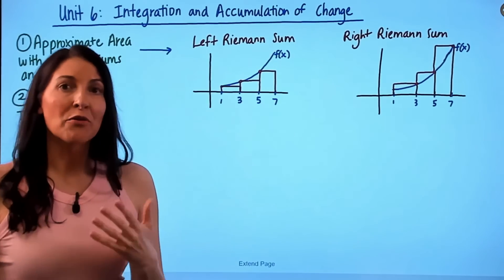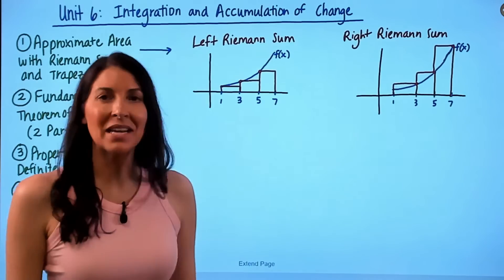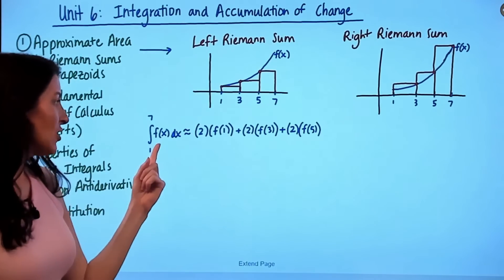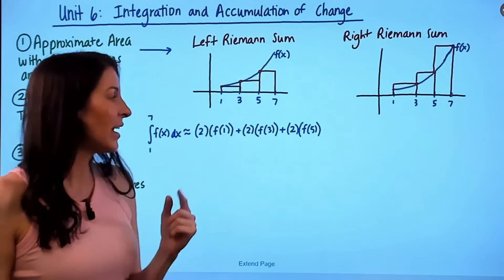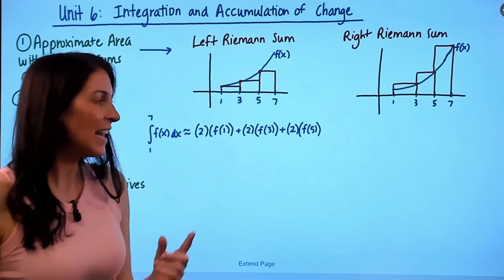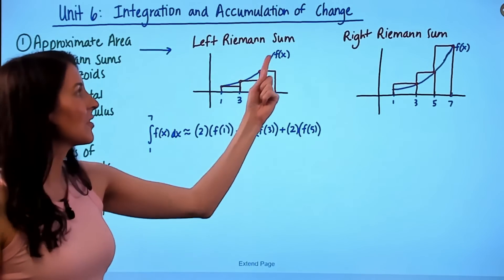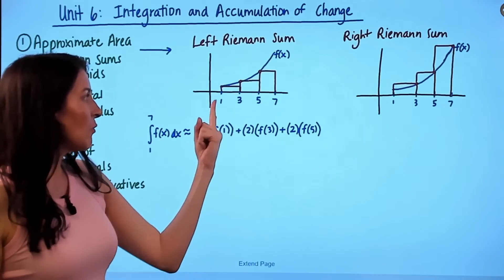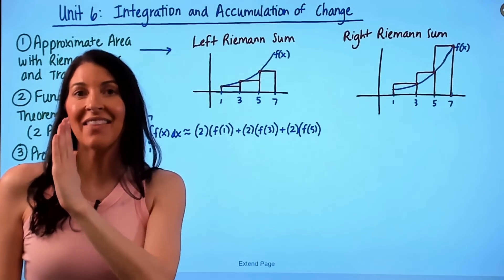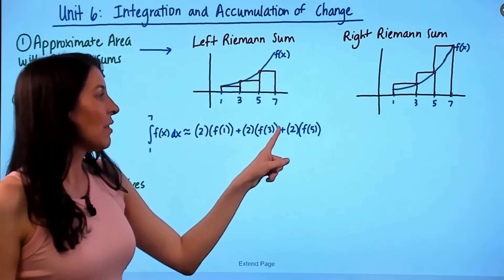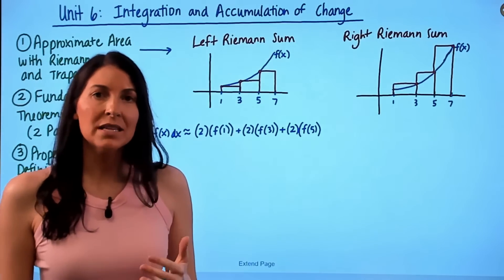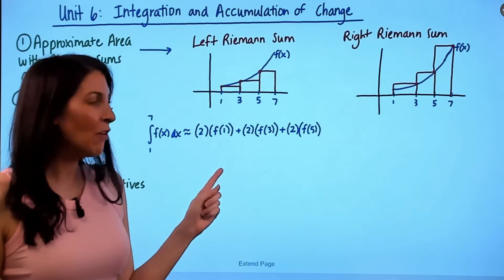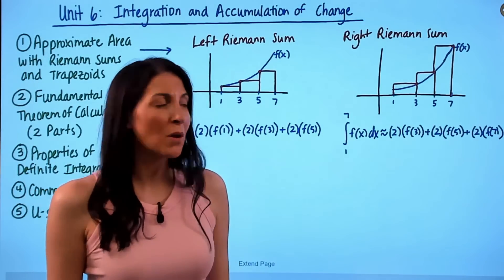To define a right Riemann sum, we simply add up the rectangles. In this case we add up three rectangles. The area of one rectangle is base times height. This notation means the exact area under the f(x) curve between one and seven, but since we're approximating, we write it as approximately equal to. The first rectangle has a base of two and height f(1); the second is two times f(3); the third is two times f(5). Since each base is two, you can factor out the two and write: two times (f(1) + f(3) + f(5)).